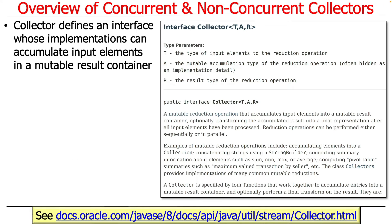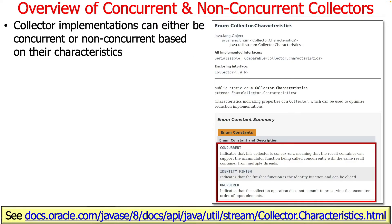Let's first give an overview of what a collector is. A collector is an interface that can be implemented to accumulate input elements into something called a mutable result container. The key point is mutable — it can be changed, unlike reduce, which can't be changed.